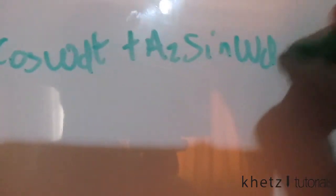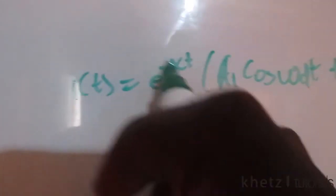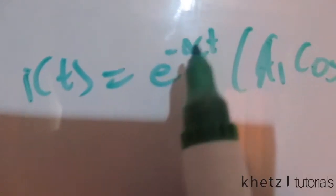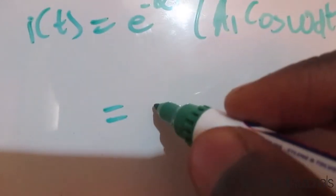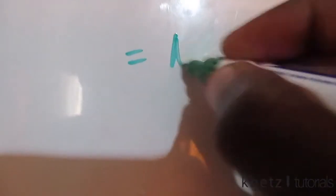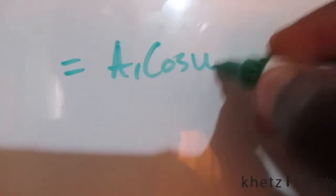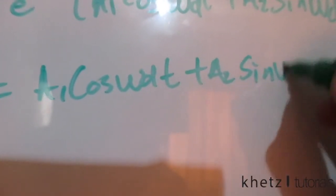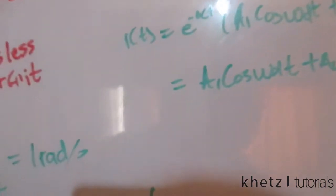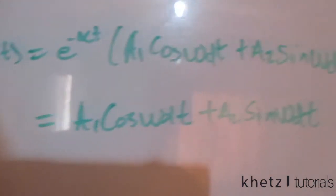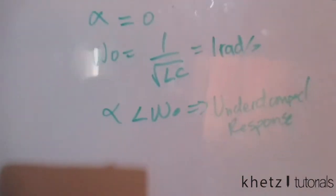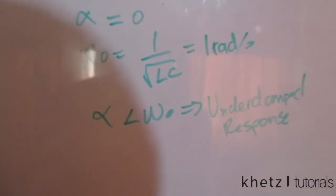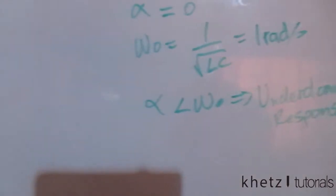Since there's no attenuation and alpha is zero, e^(−αt) simplifies to one. Therefore we only have i(t) = A1·cos(ωd·t) + A2·sin(ωd·t). We're now going to proceed to find the roots of the characteristic equation using the values we found.